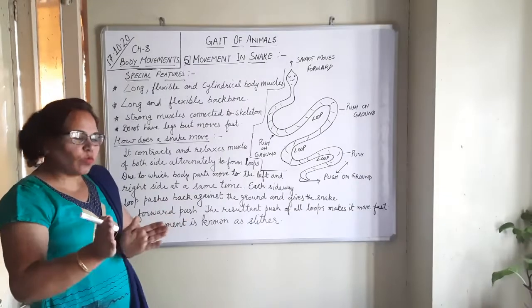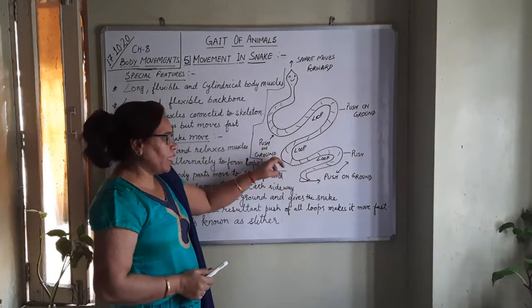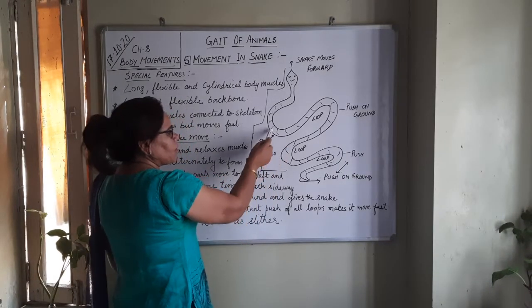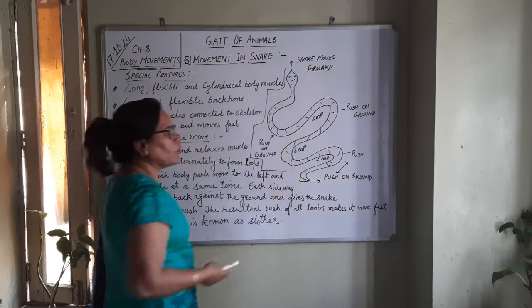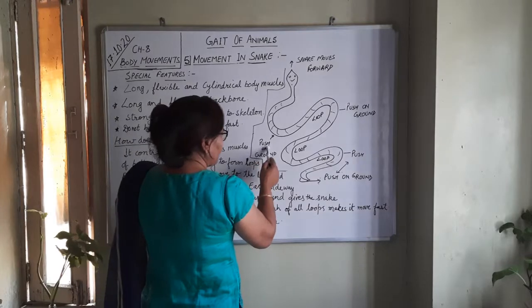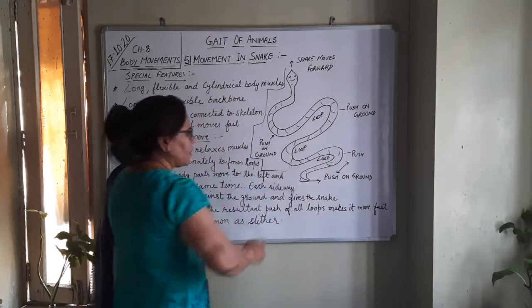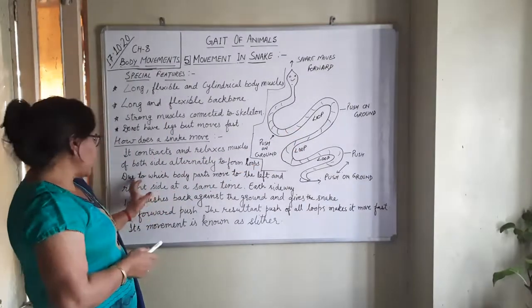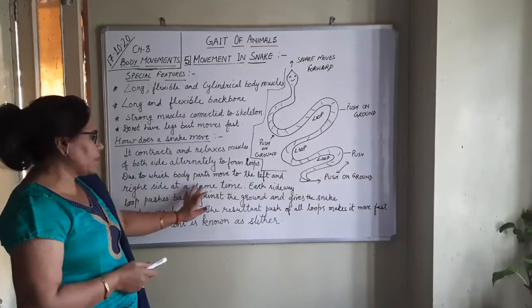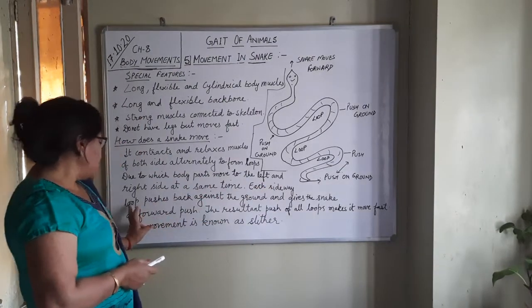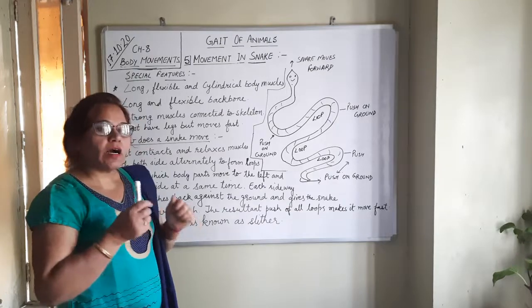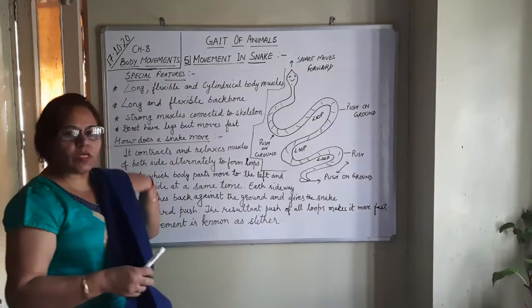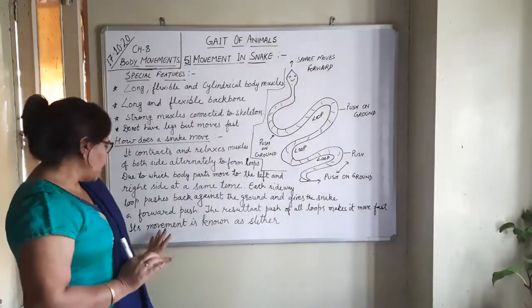These right-side and left-side loops formed by the snake's body help it move forward. When there is contraction on one side, it pushes the muscles against the ground and the body moves forward. Due to this loop formation, the body parts move to the left and the right side at the same time, and each sideways loop pushes back against the ground, giving the snake a forward push. The resultant push of all the loops makes it move on the ground very fast.